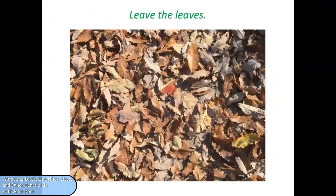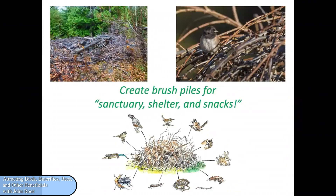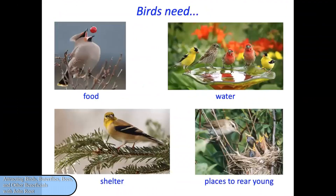Also if you leave the leaves, that will give birds a chance to find various morsels to eat, and it will give protection to caterpillars and other small animals remaining in the leaves, enabling them to continue their life cycles. Leave dead trees and snags if they are not a hazard to people or your dwelling — they can provide nesting sites and habitat for insects. Brush piles offer the three S's: sanctuary, shelter, and snacks — sanctuary when a bird is being pursued by a predator, shelter from the elements, and finding things to eat. Remember that birds need food, water, shelter, and places to rear their young.